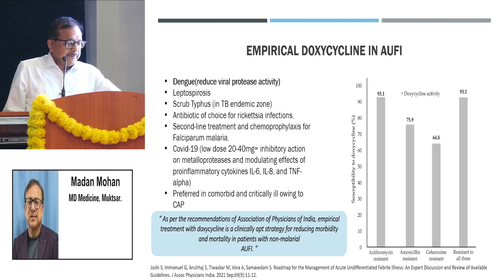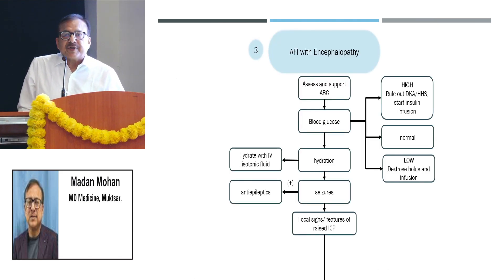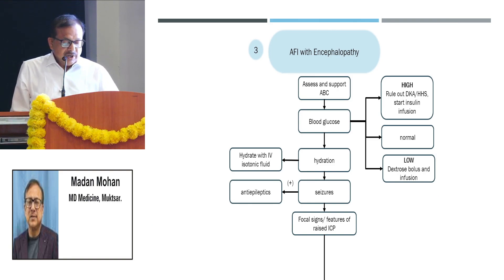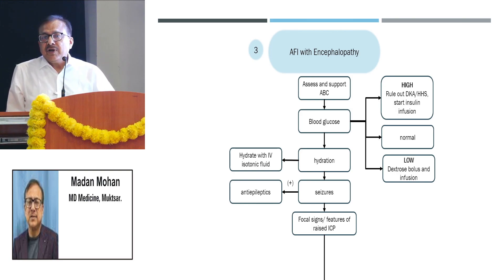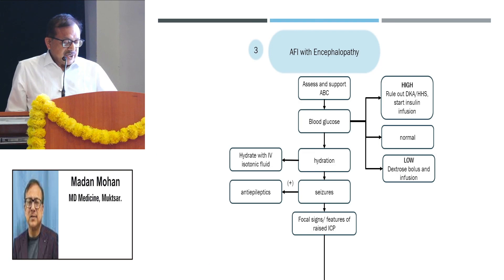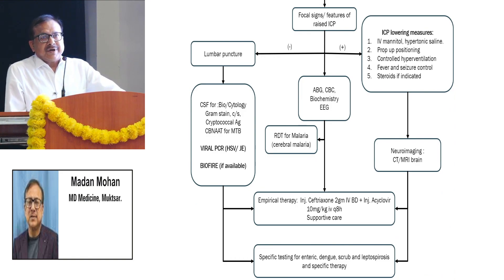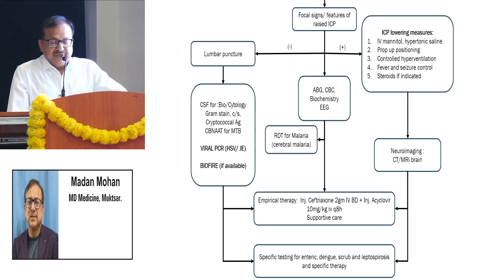Now for patients presenting with acute febrile illness with encephalopathy — immediately on arrival assess the patient and support ABC — airway, breathing, and circulation. The first step should be to measure blood glucose level to rule out hypoglycemia or hyperglycemia with fever, and manage accordingly. All such patients should be started on hydration and antipyretics. If the patient has seizures, immediate antiepileptics should be started. We look for features of raised ICP, because if we have focal signs or raised intracranial pressure, the first thing will be to start measures to lower ICP — IV mannitol, hypertonic saline, proper positioning, fever and seizure control, steroids wherever indicated.